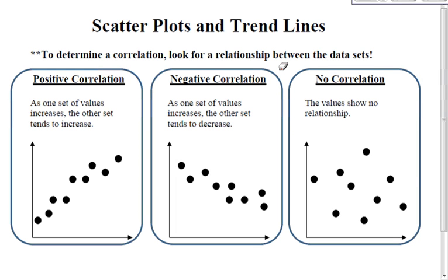In this video, we are going to learn about scatter plots and trend lines. Positive correlation on a scatter plot is when one set of values increases and the other set tends to increase as well.